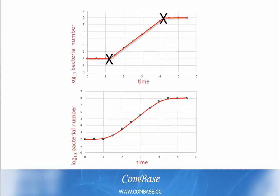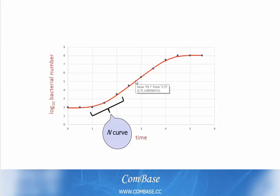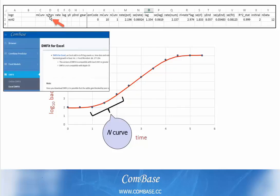In fact, the intersections of these phases show smooth curves as we go from lag to the growth phase into maximum population density. We call the transition from the lag phase to the growth phase the N curve. This curve represents the distribution of growth rates as bacteria leave the lag phase and begin replicating at similar rates and enter the growth phase. You may be familiar with the N curve if you use the DM fit for Excel, available on the Combase website.